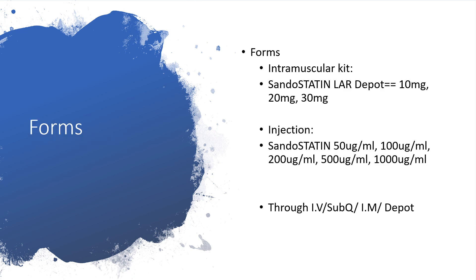It will appear in form of intramuscular kit or Sandostatin LAR Depot at 10 mg, 20 mg, or 30 mg. The injection forms are available as Sandostatin 50 mcg per ml, 100 mcg per ml, 200 mcg per ml, 500 mcg per ml, or 1000 mcg per ml. It could be administered through intravenous route, subcutaneous route, IM (intramuscular), or depot.